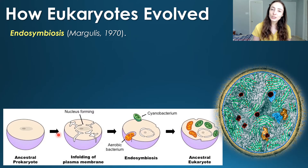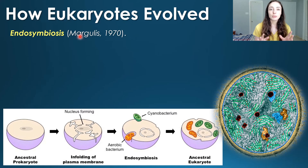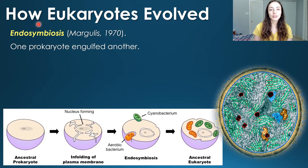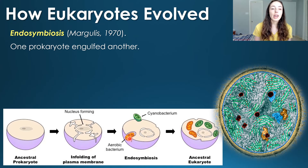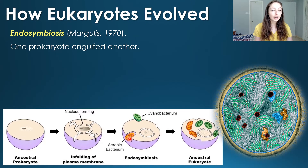So how exactly did eukaryotes evolve? Lynn Margulis around 1970 proposed endosymbiosis as a theory for how eukaryotic cells evolved, involving one prokaryote engulfing another. That engulfed prokaryote ends up becoming one of the organelles in the host cell that becomes the eukaryote. This theory seemed awfully simple and was really laughed at at the beginning, but now we have a lot of evidence for it and we know it is true.